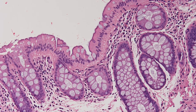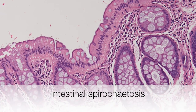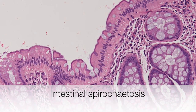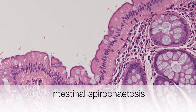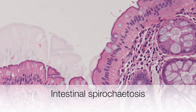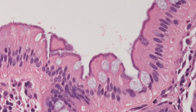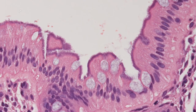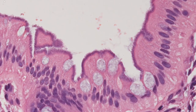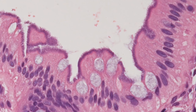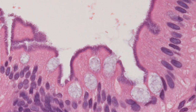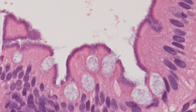This is the H&E of the colonic mucosa. The crypts appear pretty much normal. There's no obvious inflammation. But you can see a thin blue line on the surface of the mucosa. And on higher power, the blue line has a rather fuzzy appearance, and that is because the mucosa is teeming with spirochetes that are standing on their heads parallel to the microvilli, producing a sort of shag pile carpet appearance.